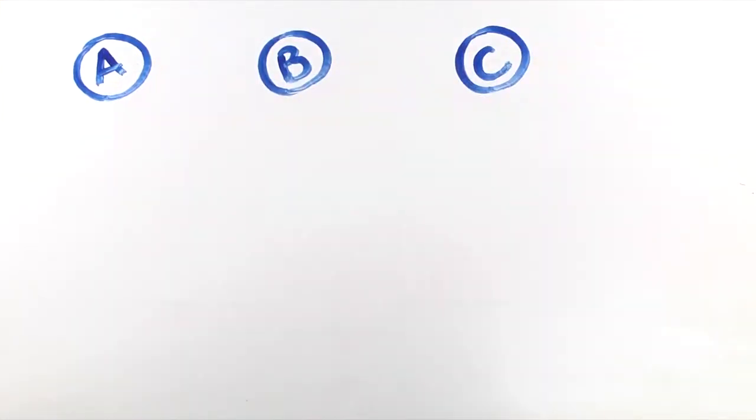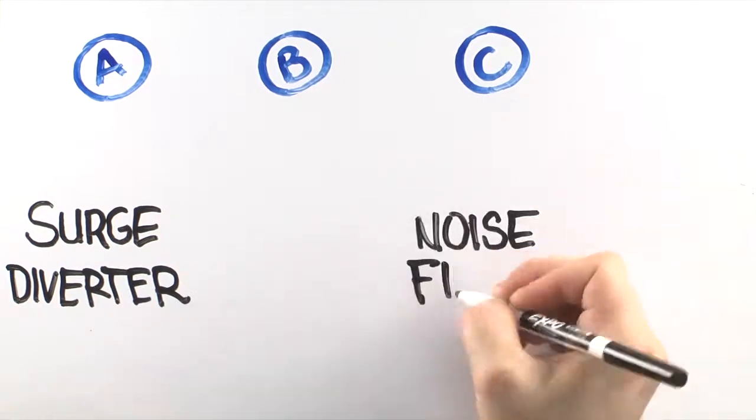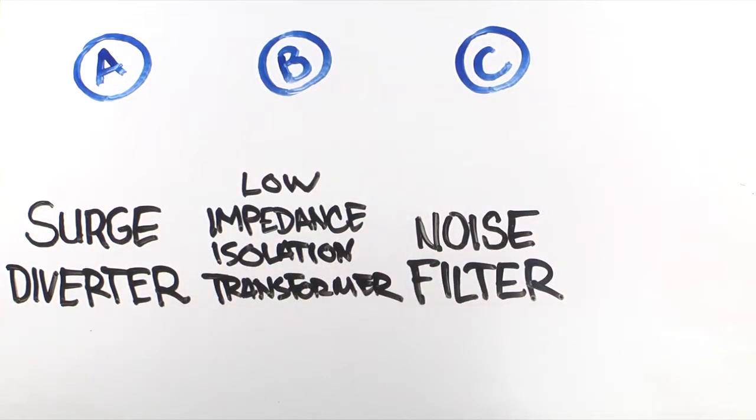The difference is in the three levels of protection. A surge diverter, a noise filter, and most importantly, a low impedance isolation transformer. It's the ABCs of power conditioning.